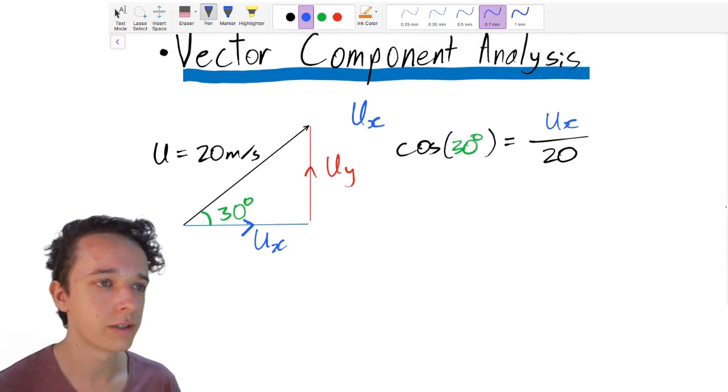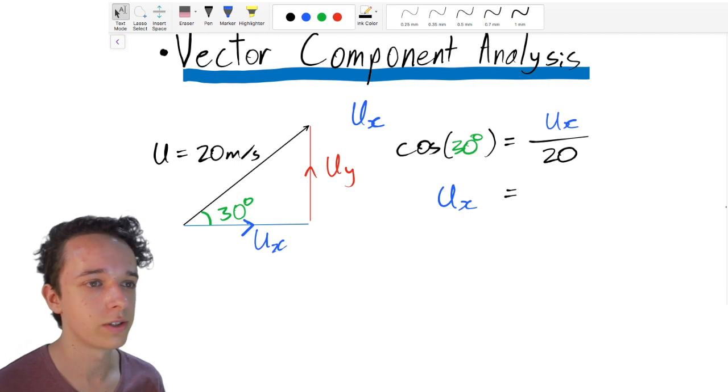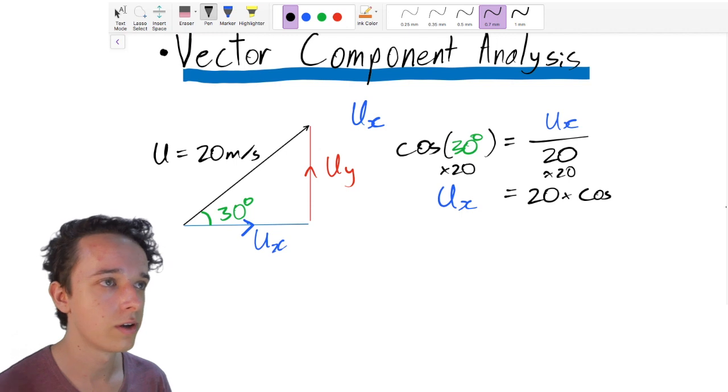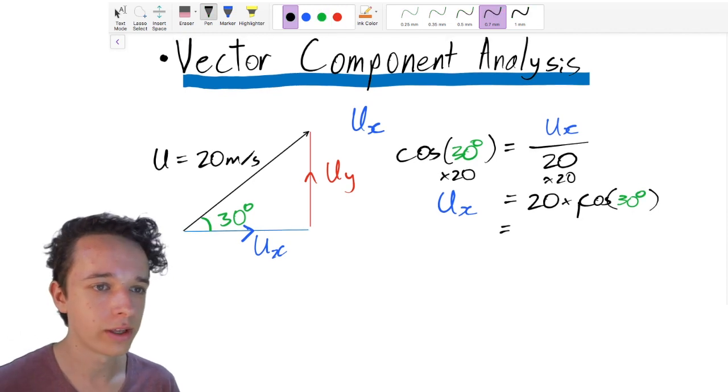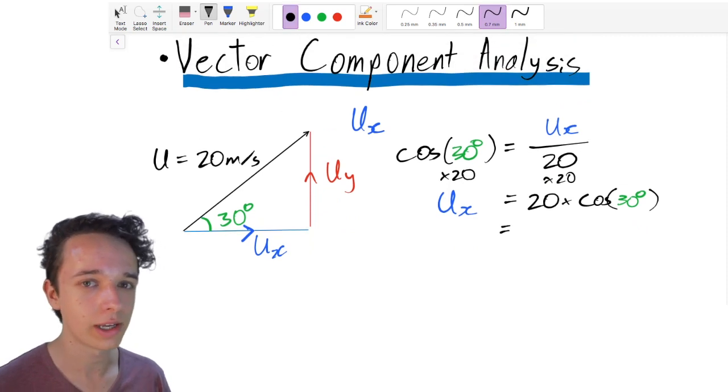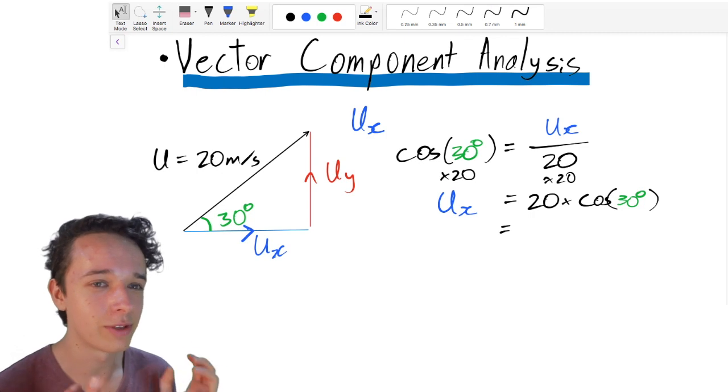Now we need to make u of x the subject of this equation here. And so we need u of x equals something. Well, the only thing that we've got that is acting upon the u of x here is this divided by 20 term. So we want to do the reverse of that to get u of x on its own. So we multiply this side by 20. And if we do something to one side, we have to do it to the other. So we also multiply the other side by 20. And we're left with 20 times cos of 30 degrees. So I know that cos 30 is an exact value, or it has an exact value. And I want to try and keep that exact value because it makes my final answer a little more accurate. So problem is, I don't remember what cos 30 is. And so how do I find what the exact value is?